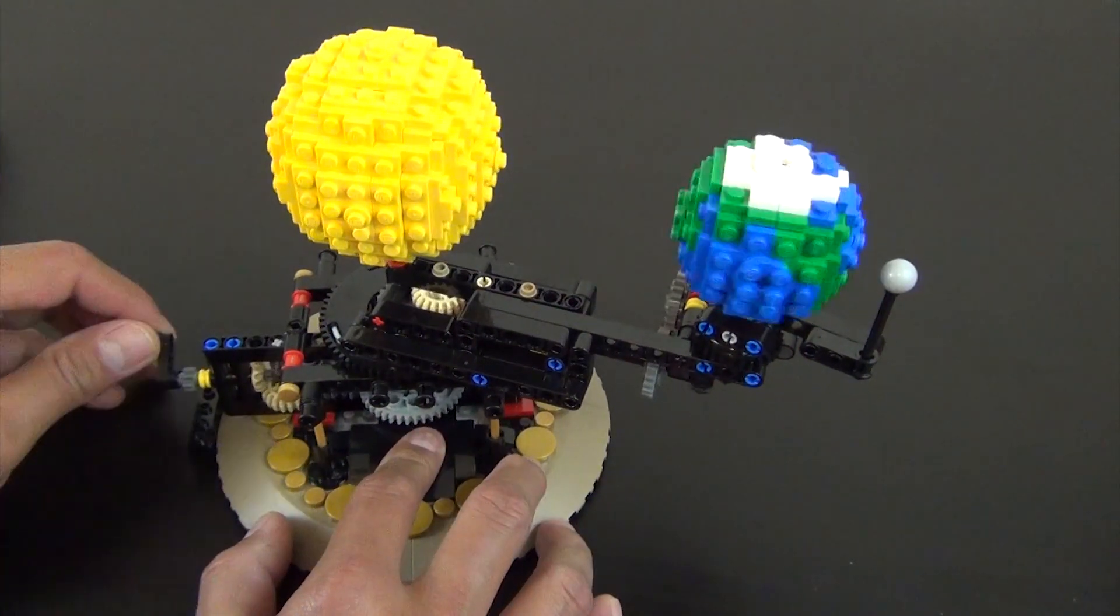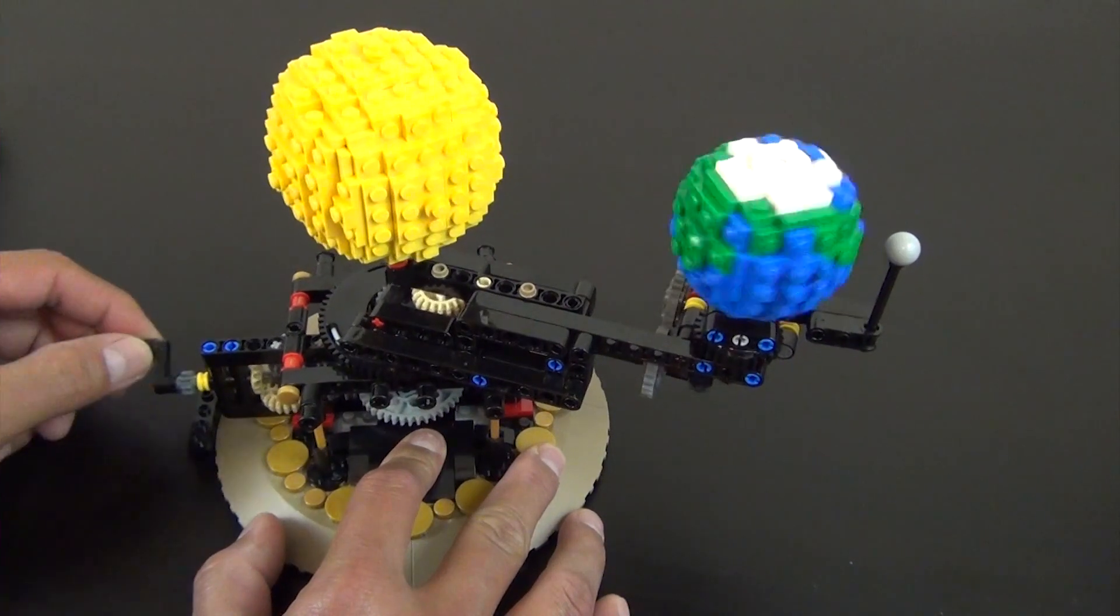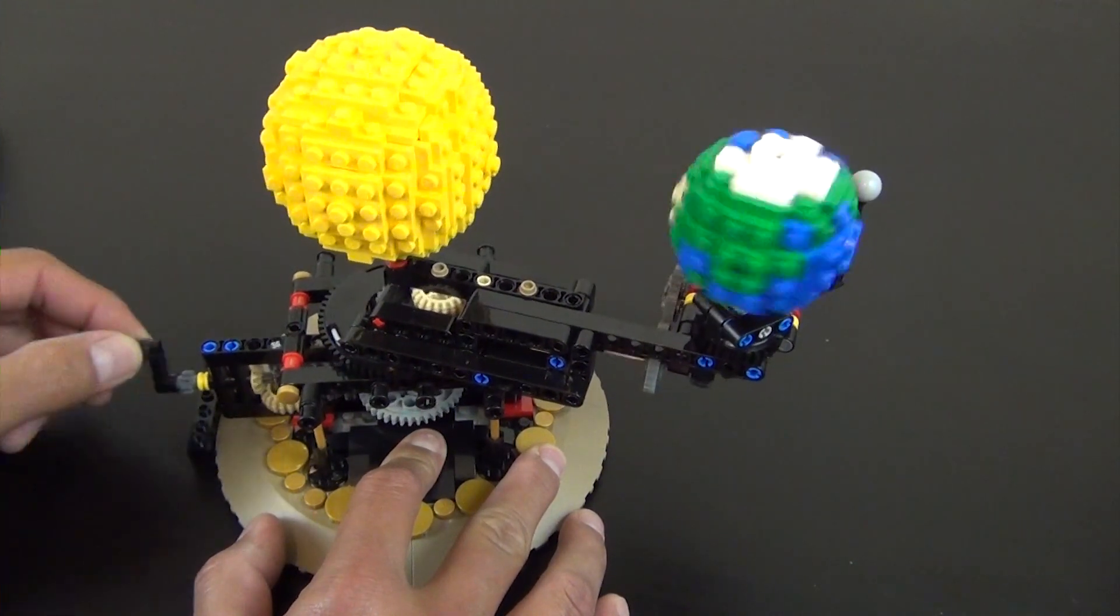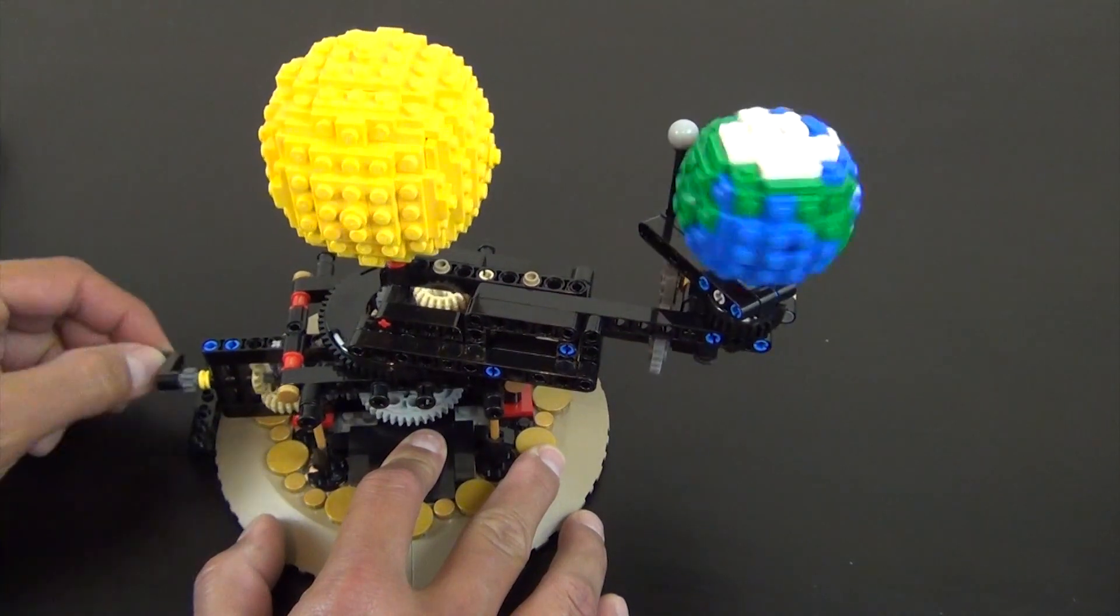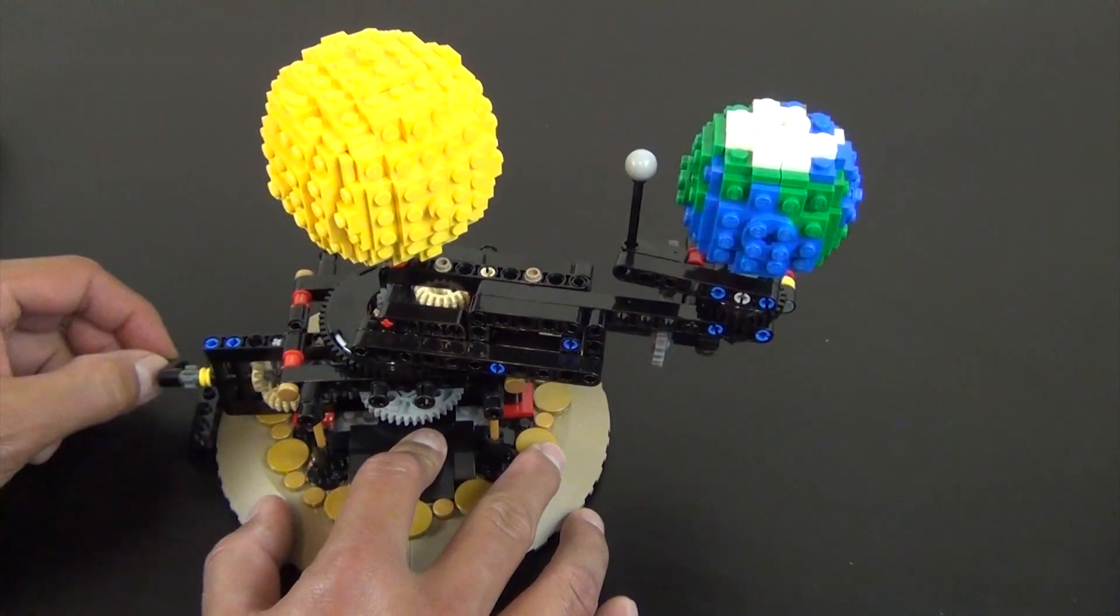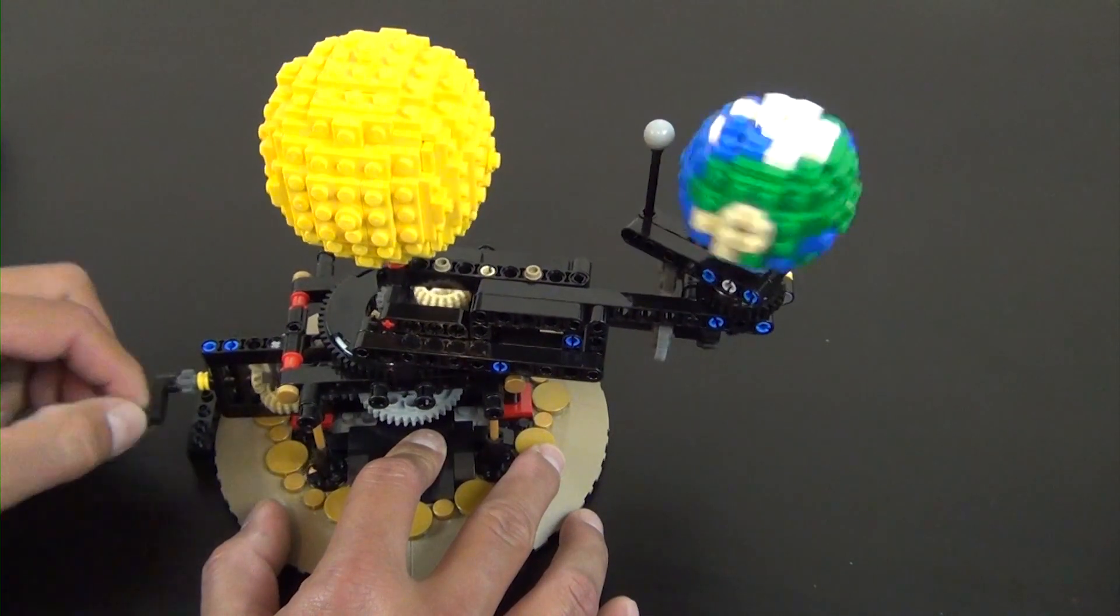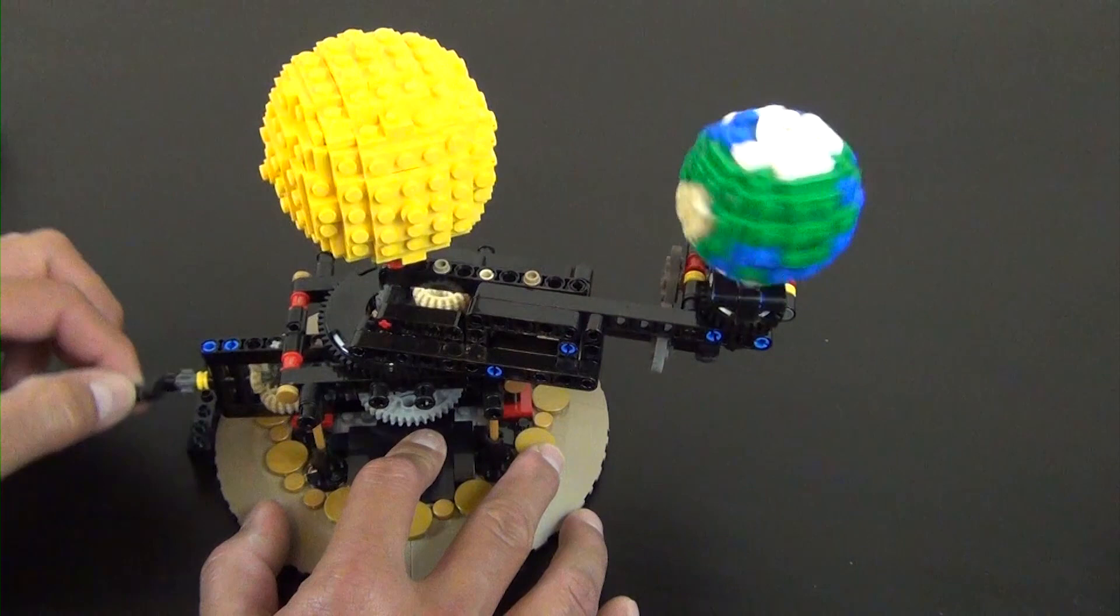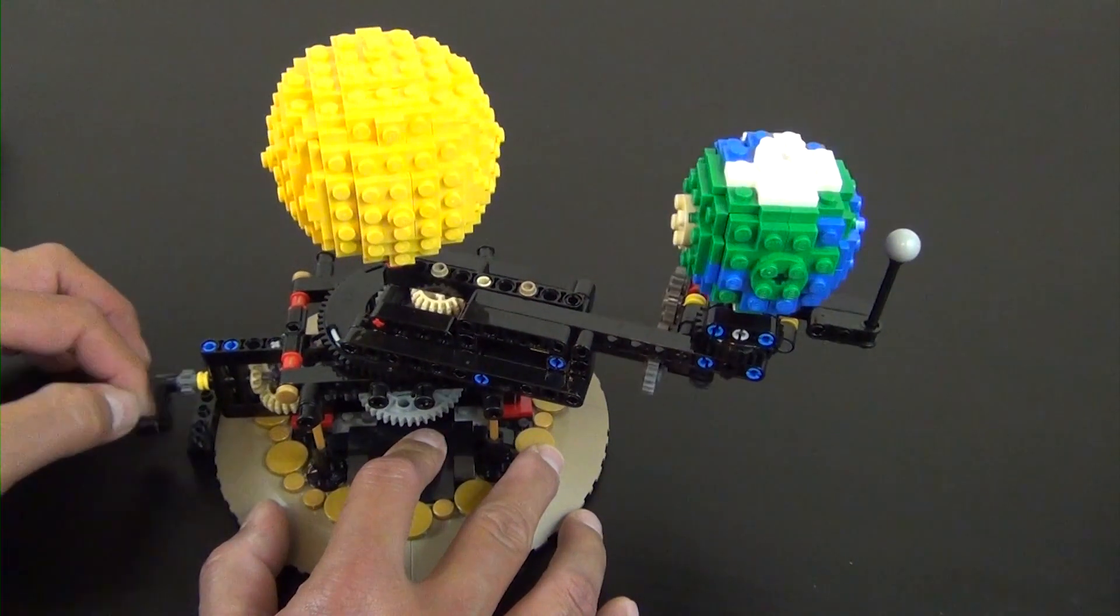So you can see it's an orrery, a model based on the solar system, and you can see with the crank here we turn it and the moon is rotating around the Earth, the Earth is rotating around the Sun, typical to a standard orrery. So it's not the full solar system, it's just the Sun, Earth, and moon.